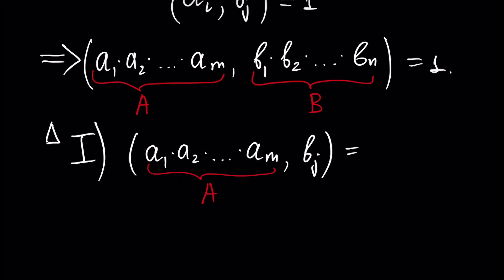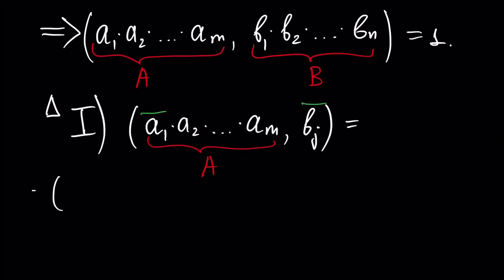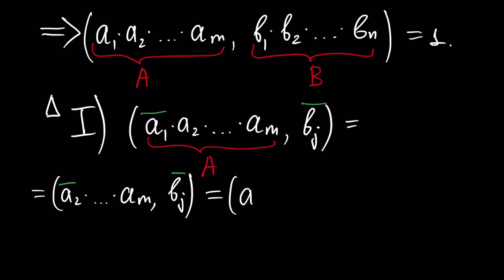Using our previous result, since by the condition of our theorem each AI and any BJ is relatively prime, we can write — using the previous result — this is equal to the multiplication of A2 times and so on AN, and GCD of those two numbers. So we got rid of A1. Since A2 and BJ are relatively prime, we can write it as A3 times and so on AN, and BJ.